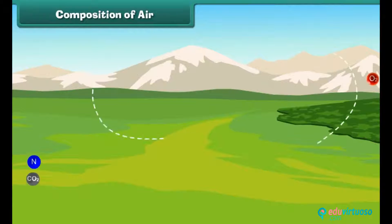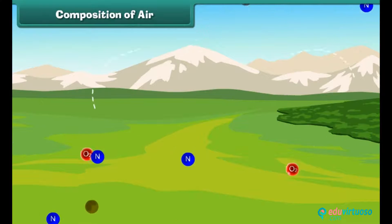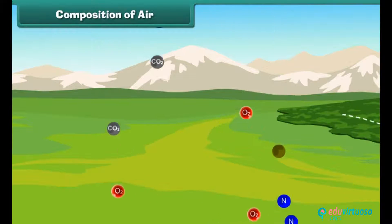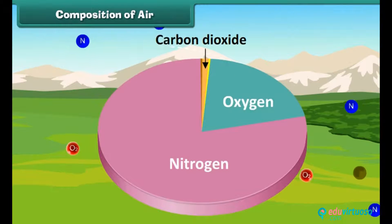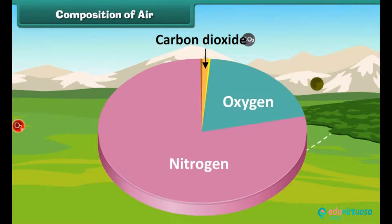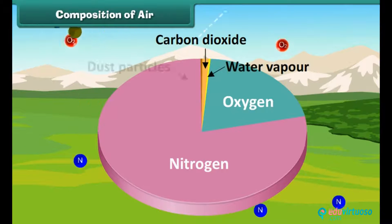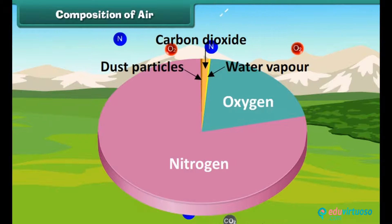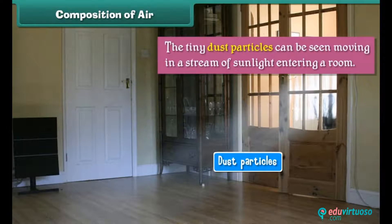Air is made up of several gases, the most important being nitrogen, oxygen, and carbon dioxide. Air also contains water vapor and dust particles. The tiny dust particles can be seen moving in a stream of sunlight entering a room.